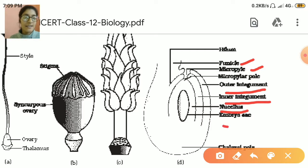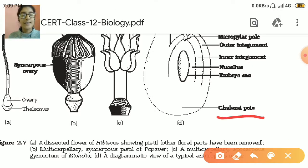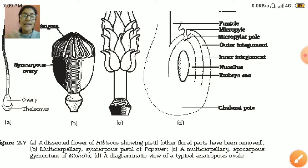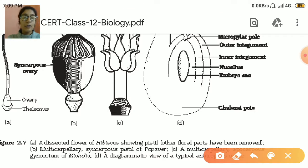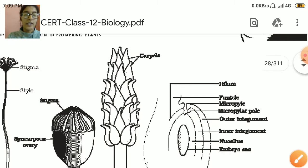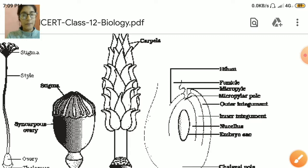Inside that is the embryo sac, where the formation of the embryo is taking place. And at the end is the chalazal pole, or chalazal end — it is the end of the ovule. So this is the basic anatropous ovule and its parts. You have to learn how to make this diagram and be very particular about the micropylar and the chalazal end. The micropylar end is where the placenta enters the ovule, and the chalazal end is opposite to the micropylar end.